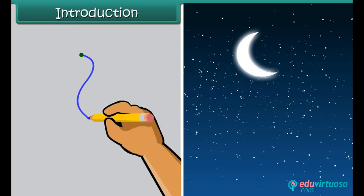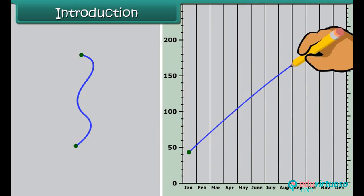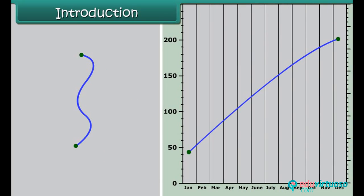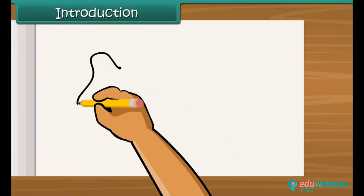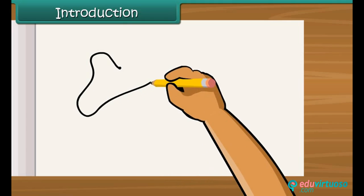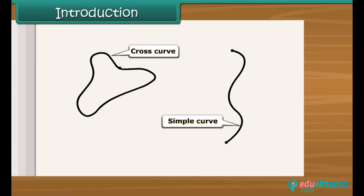A curve in everyday usage means not straight. In mathematics, a curve can be straight also. A curve can cross itself or may not cross itself. If a curve does not cross itself, then it is called a simple curve.